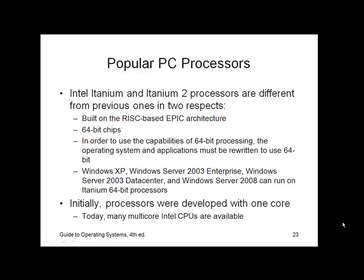In 2001, Intel developed the Itanium processor. Along with its cousin the Itanium 2, these chips are notable in two respects: it was the first time we saw RISC-based EPIC architecture integrated into the processor, and they are 64-bit chips designed for high-end systems, computer servers, and workstations. To use the capabilities of 64-bit processing, the operating system and applications had to be rewritten. Windows XP, Windows Server 2003 Enterprise, 2003 Data Center, and 2008 can run on Itanium 64-bit processors, though they may not make full use of 64-bit compatibility — with the exception of Server 2008.